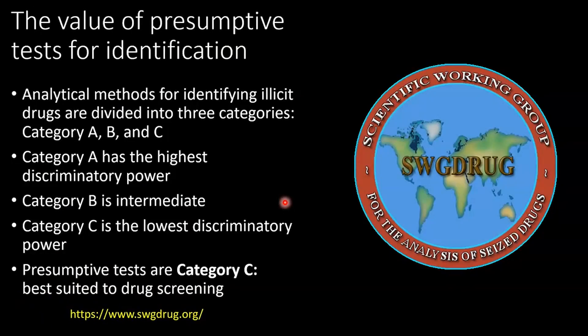It's worth talking about the value of presumptive tests in the identification of an illicit drug. According to Swage Drug guidelines — which there's a whole separate video on — the analytical methods for identifying illicit drugs are divided into three categories: Category A, B, and C. These categories have different discriminatory power; A and B are the most discriminatory, whereas C has the lowest. Presumptive tests are primarily Category C, so they are best suited to screening and forming preliminary decisions on what illicit drugs could be, which feed into the choice of which Category A and B tests to perform afterwards. The cost of running a presumptive test is very, very low — much cheaper than running Category A or Category B instrumental analyses.